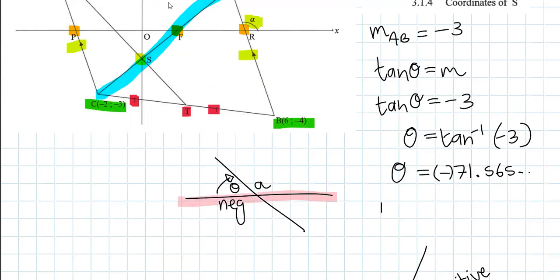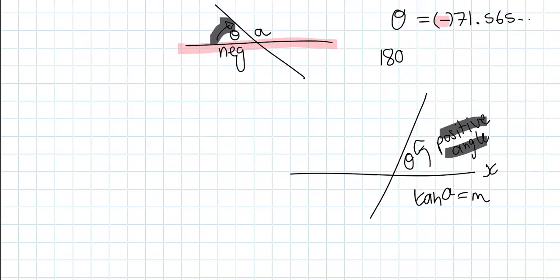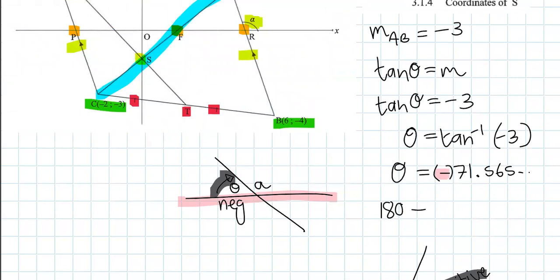So we use tan theta equal to M. What we've asked the calculator to do is give us a negative angle, meaning it's coming up from the left. So there's just one last step. We have a straight line, so you take 180 minus the theta. So 180 minus 71.565 will give us our alpha, which is 108.44 degrees to two decimal places.